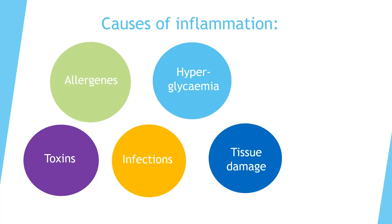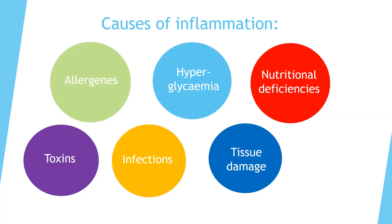Tissue damage creates local inflammation which can become systemic. Nutritional deficiencies also play a role — mainly B vitamins and magnesium. If you don't have enough, you have more risk of inflammation. Vitamin D is very important, especially if you are elderly or taking statins for heart disease, because statins decrease a lot of vitamins, especially antioxidants and vitamin D. Vitamin D is also important for hormonal balance, and magnesium is important for enzyme function.